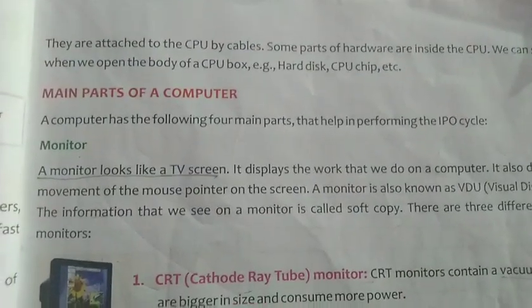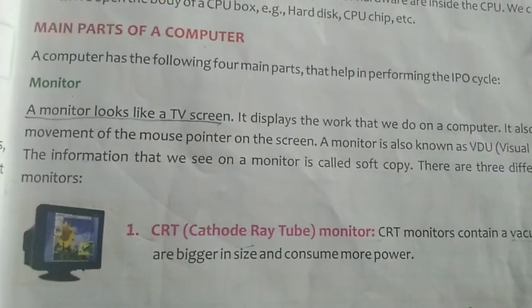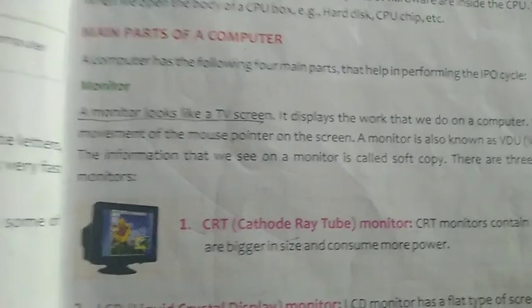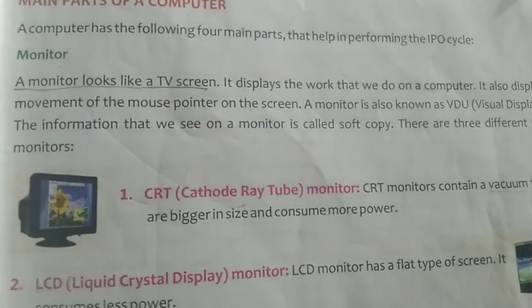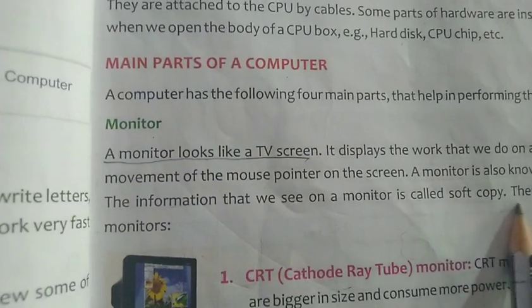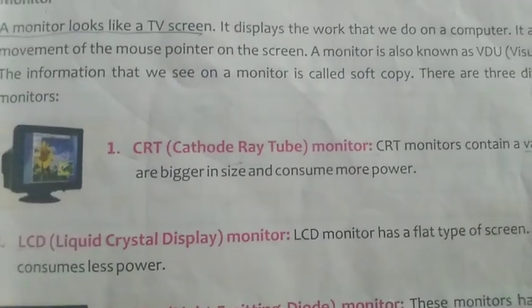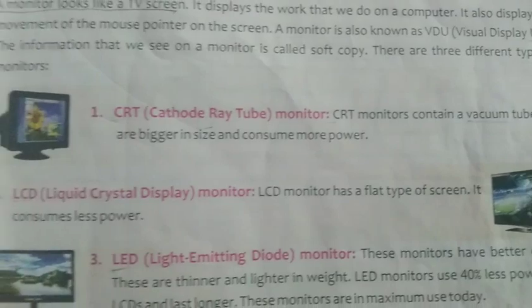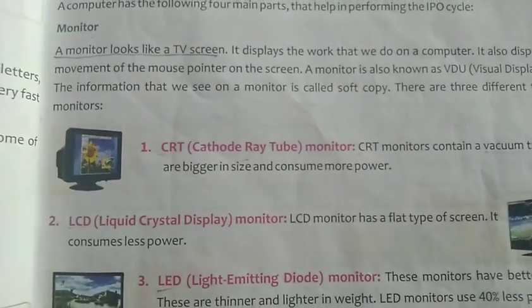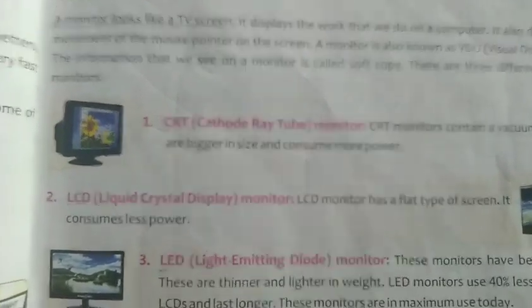Let's look at the main parts of the computer. First is the monitor. The monitor looks like a TV screen. It is an output device where the answers or display are shown. The information that we see on a monitor is called a soft copy. There are three different types of monitors. The first is CRT or cathode ray tube. CRT contains vacuum tubes, is bigger in size, and consumes more power. This type of monitor was used 7 or 8 years back but nowadays it is very rare to see.